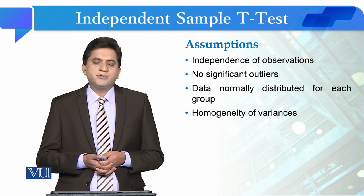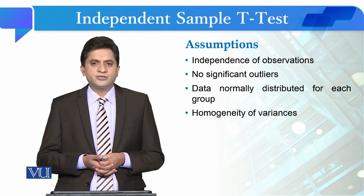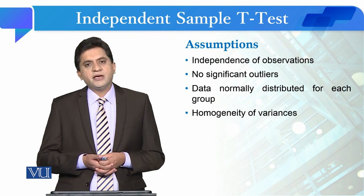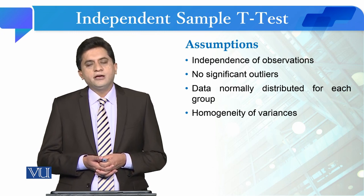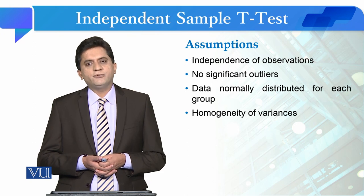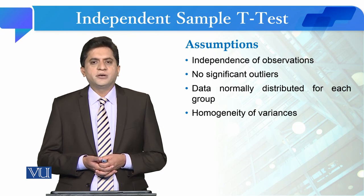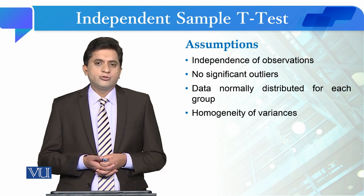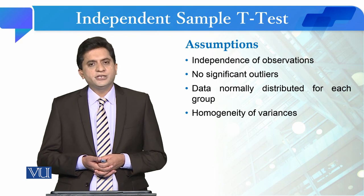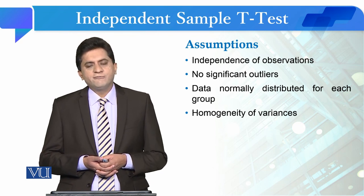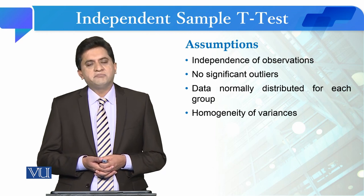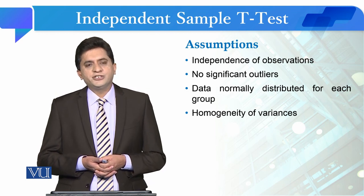Before performing the independent sample t-test, let us discuss its assumptions. The first assumption is that there should be independence of observations — meaning your respondents belong to only one particular group and do not fall into both groups simultaneously. For example, if we want to see the effect of gender on GPA, independence of observation can be assumed because whoever reports as male will not fall in the female category.